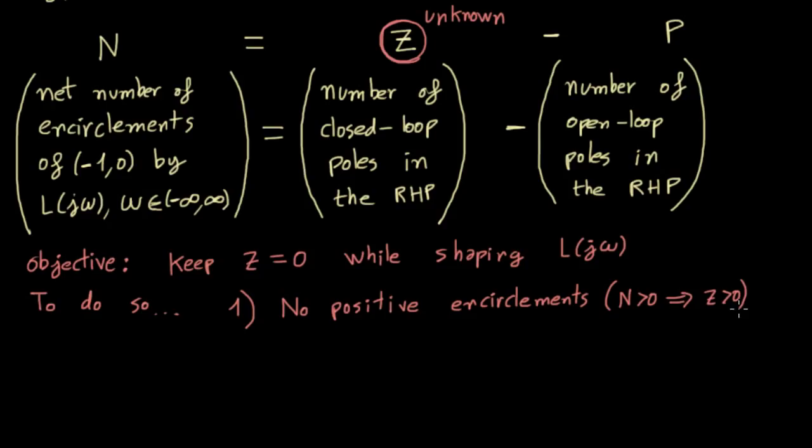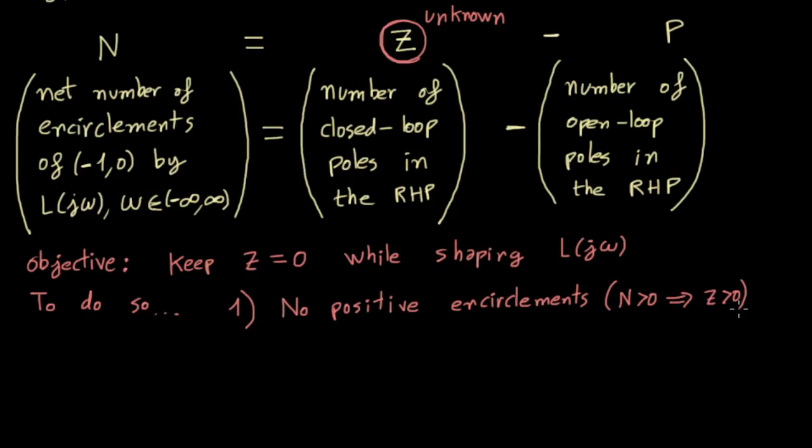And second, there are as many counterclockwise encirclements of the critical point as right half plane poles in L of s. In other words, n must be equal to minus p. In particular, when the system is open loop stable, there shouldn't be any encirclements at all.